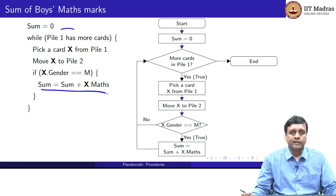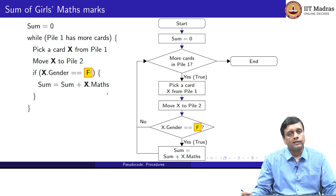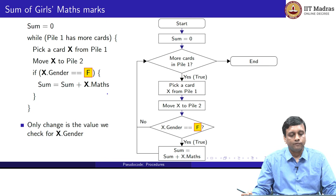Let us consider a variation on this problem. The obvious variation is that instead of looking for the boys' maths marks, we want to add the girls' maths marks. What would change? Quite obviously, the only thing that would actually change is what you check for the gender on the card. Instead of checking that the gender is M, you check that it is F. This is the only change; the rest of the code is identical.